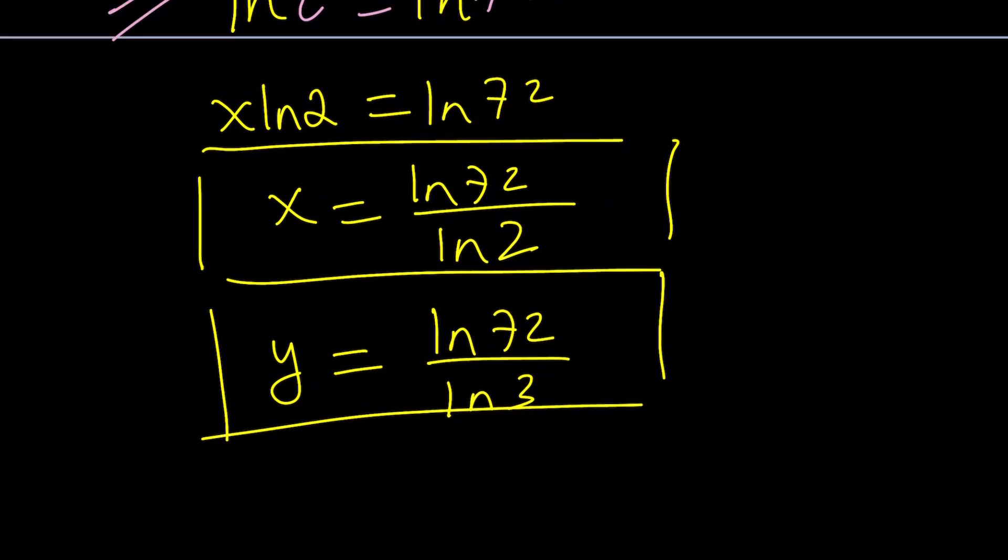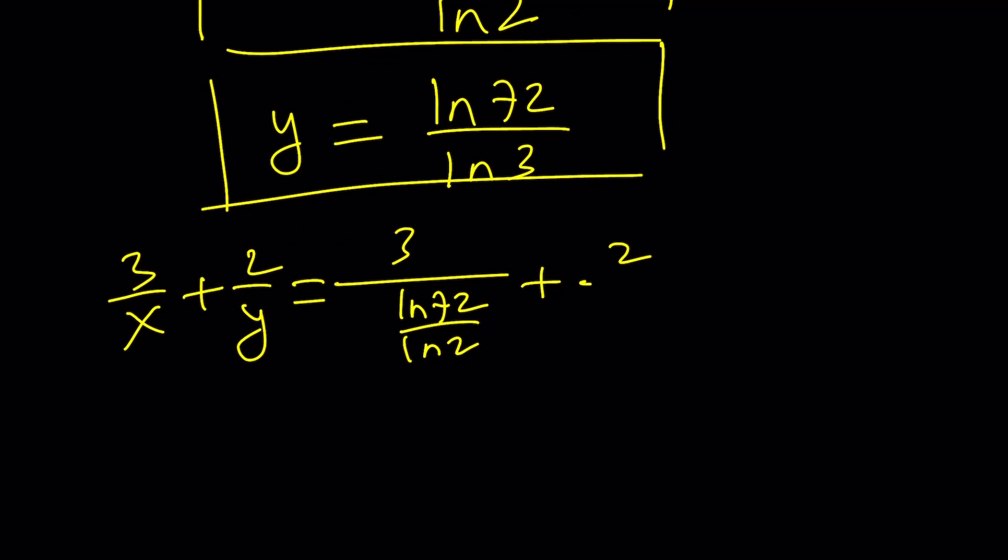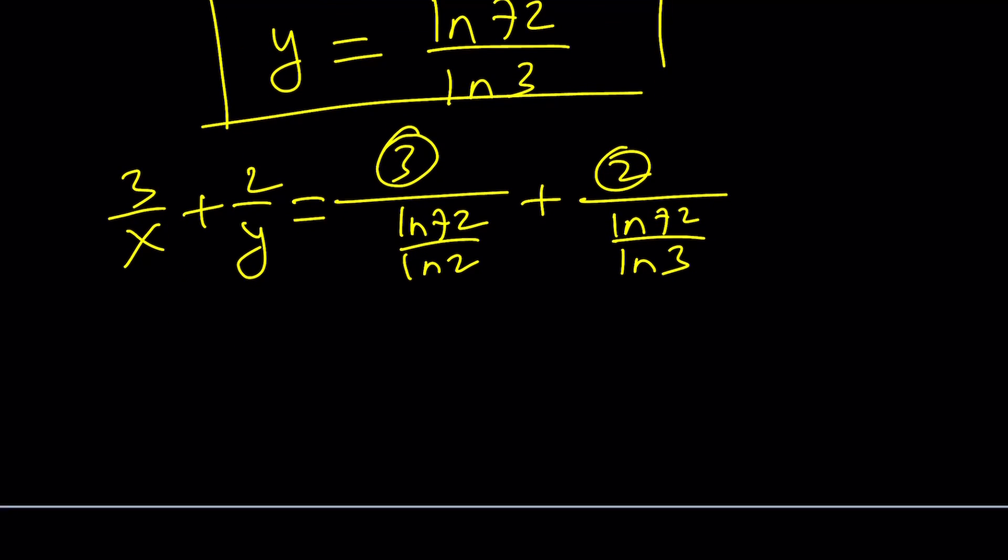Now, we're going to go ahead and plug these into 3 over x plus 2 over y. Because this is what we're trying to evaluate. So 3 over x, which is ln 72 over ln 2, plus 2 over y, which is ln 72 over ln 3. When we're dividing fractions, you can think of this as 3 over 1 and this as 2 over 1. We flip the bottom one. In other words, we multiply the top and the bottom by the reciprocal. So this is basically how this works, ln 2 over ln 72. That's how division is explained with fractions. Multiply by the reciprocal.